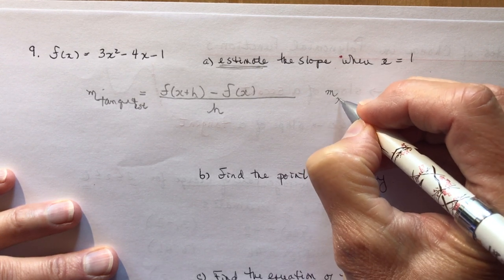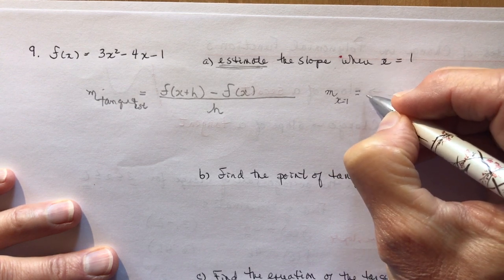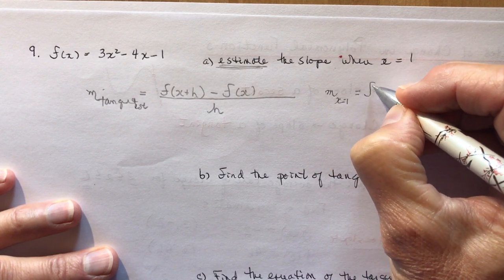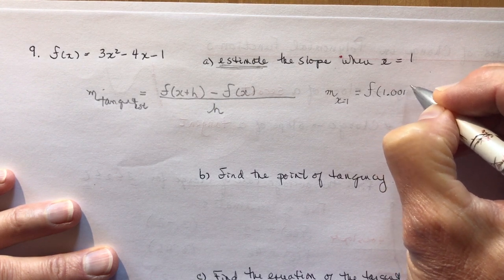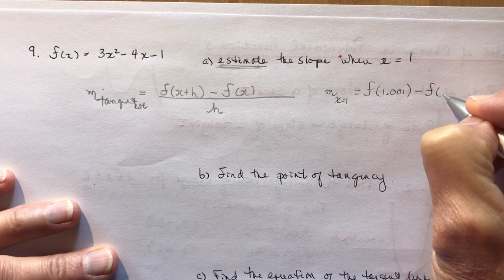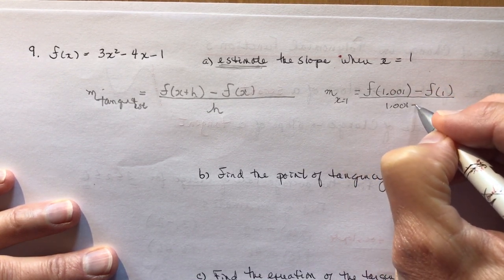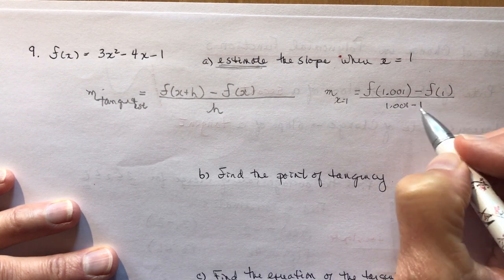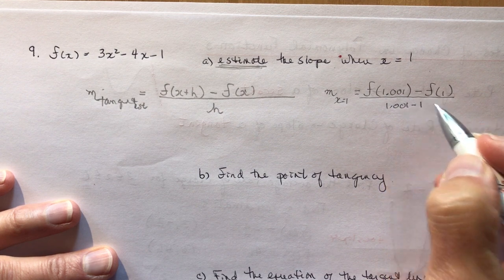What we're doing is we're making the h really, really small. So the slope, when x is equal to 1, is going to be equal to the function at 1, and we're going to take a small interval. So 1.001 minus f at 1 over 1.001 minus 1. So this is my h, what I've added. I've added in 0.001.